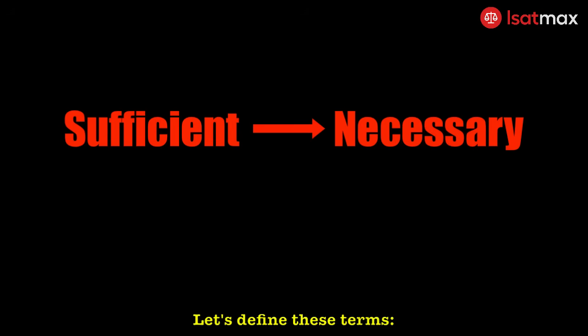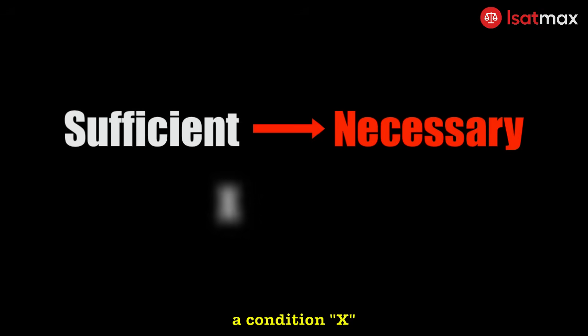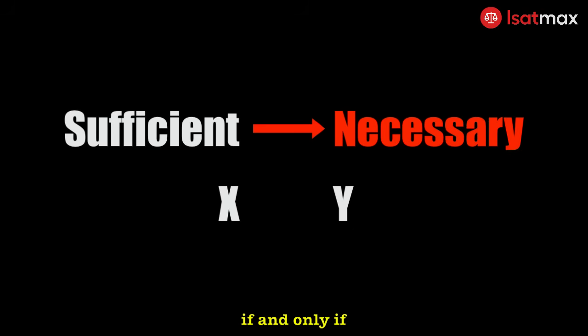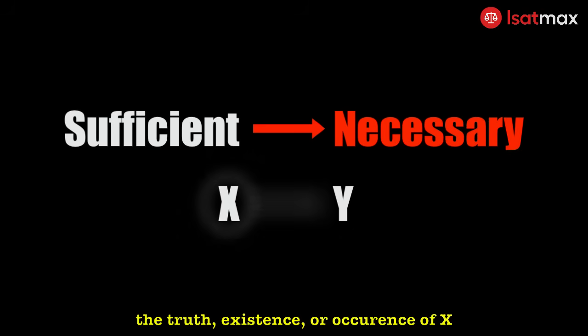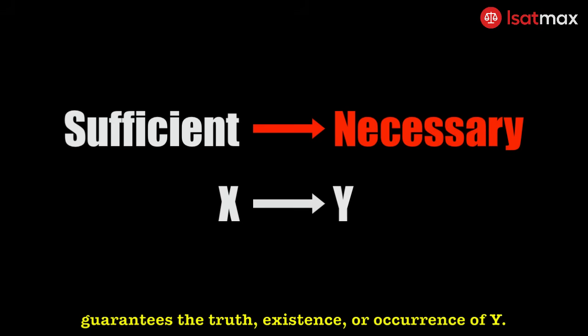Let's define these terms. A condition X is said to be sufficient for another condition Y if, and only if, the truth, existence, or occurrence of X guarantees the truth, existence, or occurrence of Y.